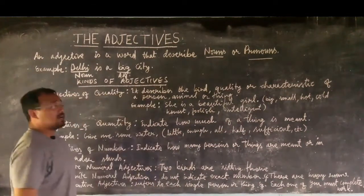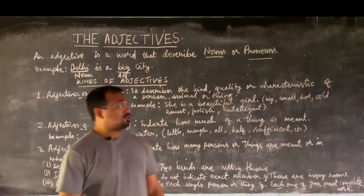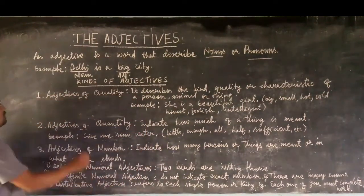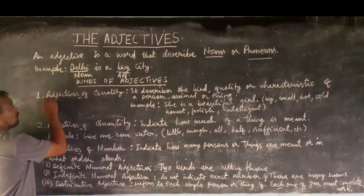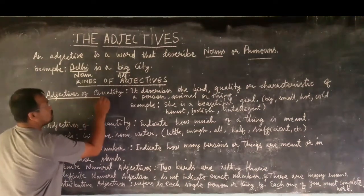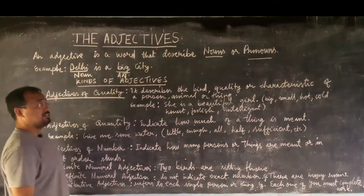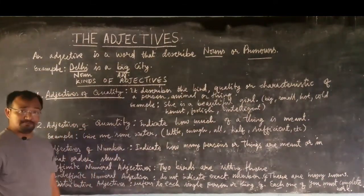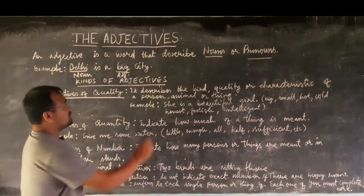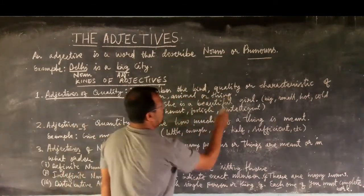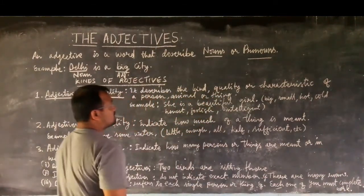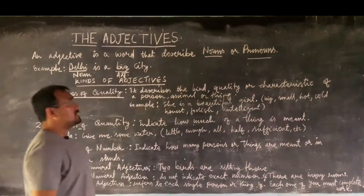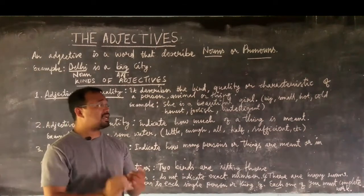There are various kinds of adjectives, so we'll discuss them one by one. The first kind is the adjective of quality. An adjective of quality describes the kind, quality, or characteristics of a person, animal, or thing.